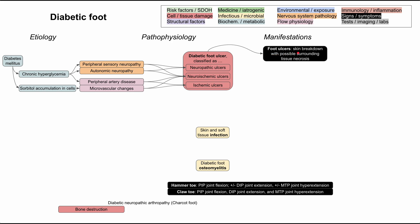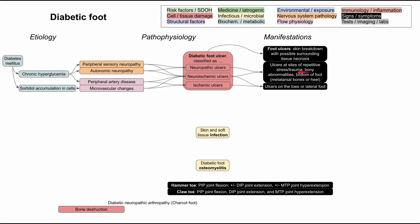Ulcers are when your skin is broken down with possible skin necrosis and surrounding tissue necrosis. Neuropathic ulcers tend to occur in places of repetitive stress and trauma — like the bottom of your foot, the metatarsal bones, and the heel. Ischemic ulcers tend to occur on the toes or in the lateral foot — the places furthest away from the blood supply — such as the very tips of the toes.